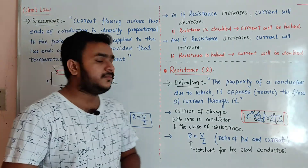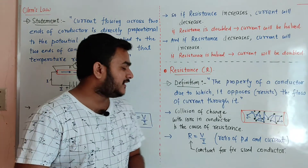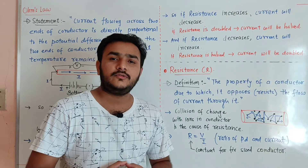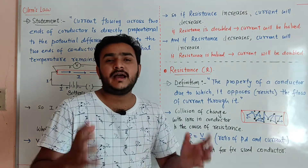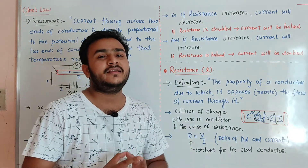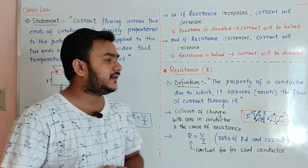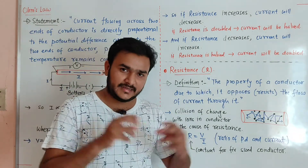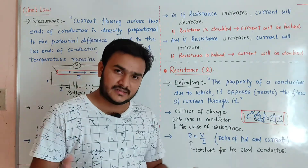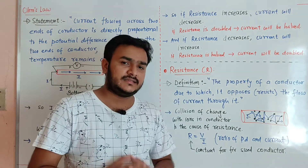The mathematical formula for resistance is given by V upon I, that means it is the ratio of the potential difference applied to the amount of current flowing through the conductor. The V to I ratio is fixed for any conductor — it is constant for a fixed size of conductor. If I have a conductor whose length, breadth and cross-sectional area are constant, then that conductor's resistance will be constant.